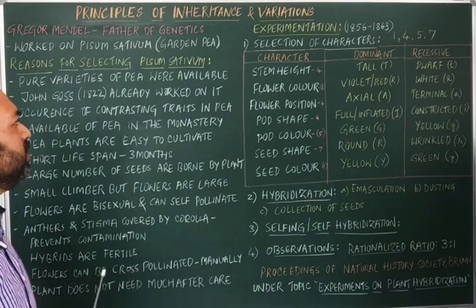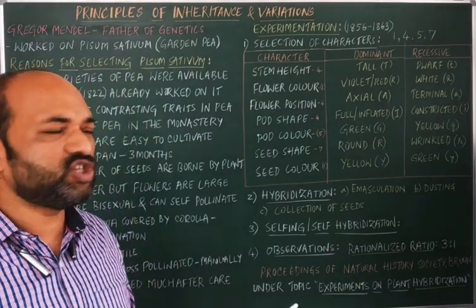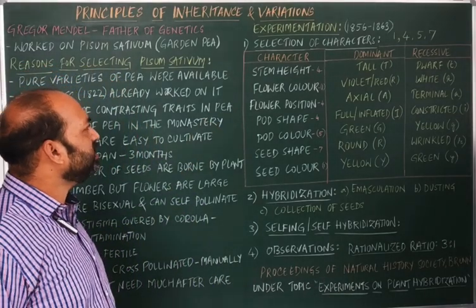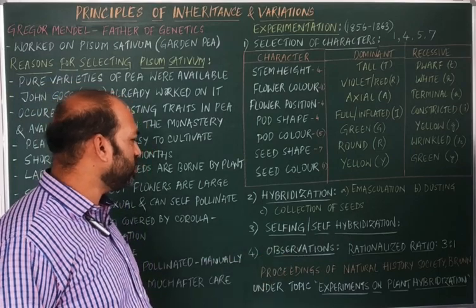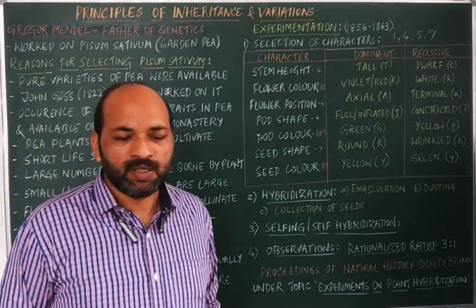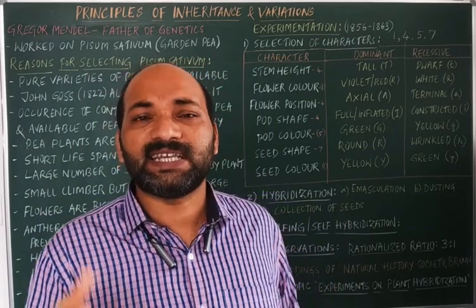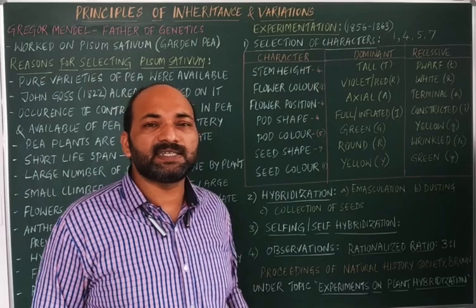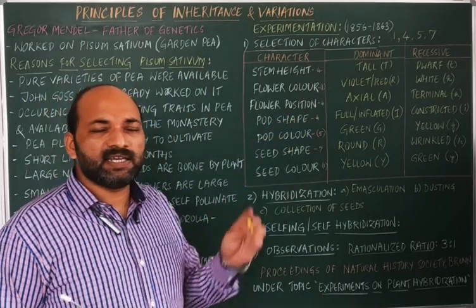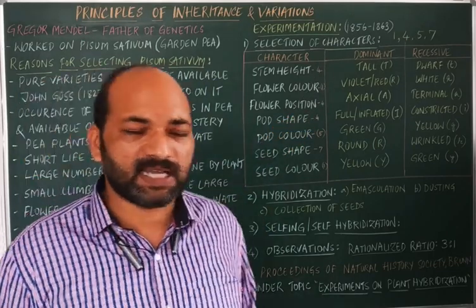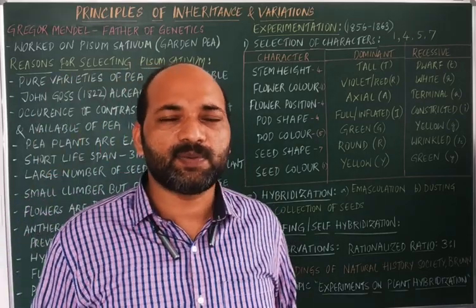The next part is: what are the steps involved in Mendelian experiments? The first step is selection of characters, second is hybridization, third is selfing or self-hybridization, and the fourth is observation or results. Mendel, once after selecting the characters in the pea plant, conducted experiments for around 7 years — that is, around 1856 to 1863. This is a question which has been previously asked in NEET. He did these experiments on Pisum sativum.